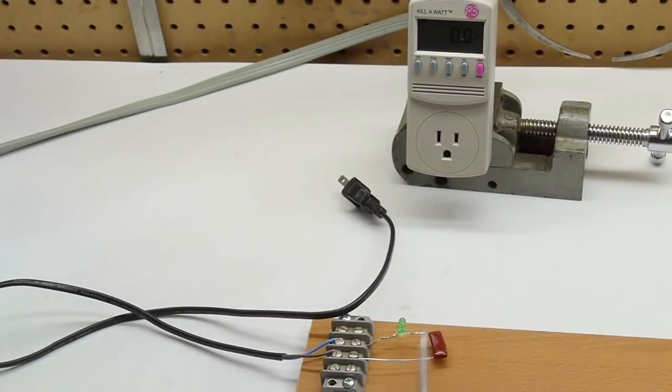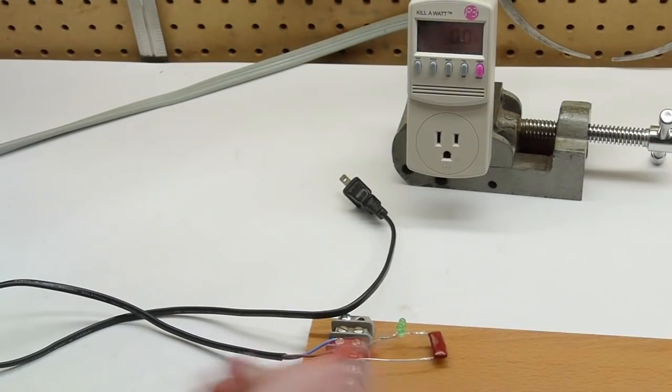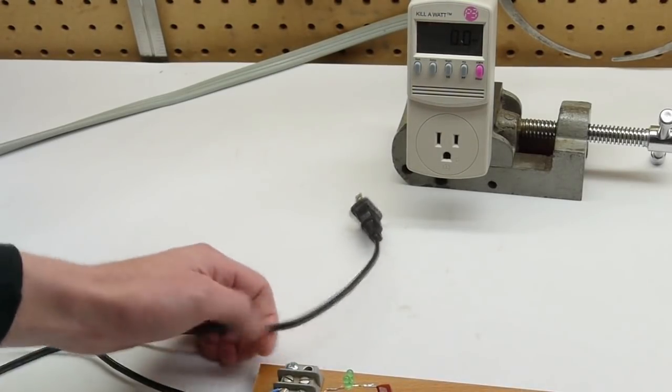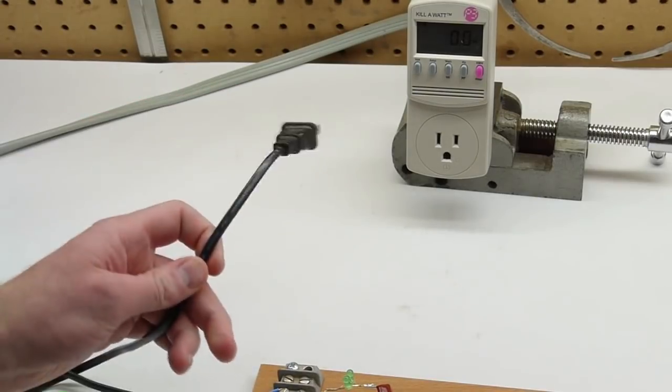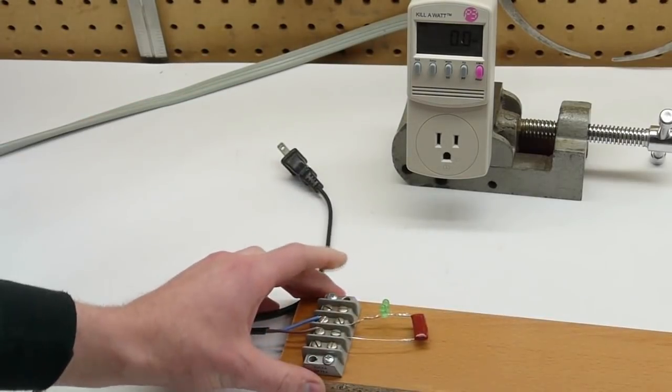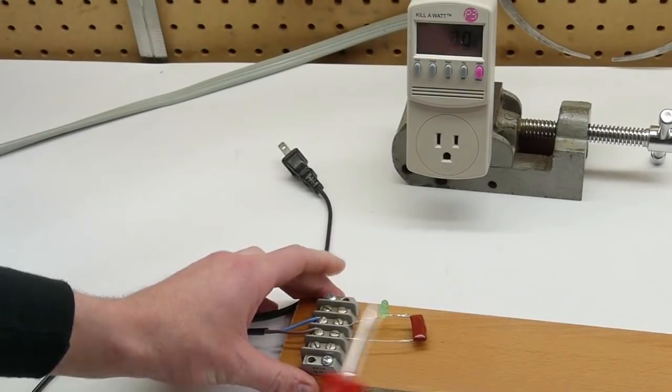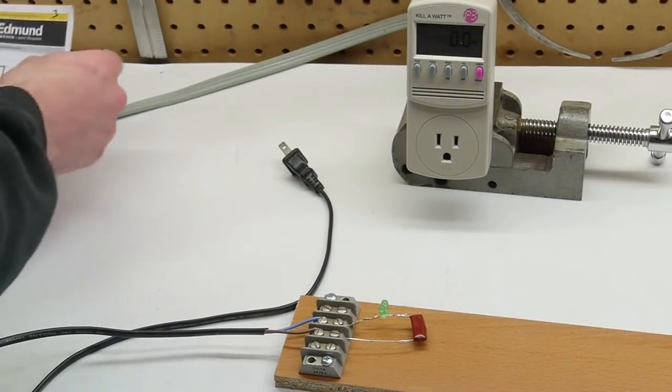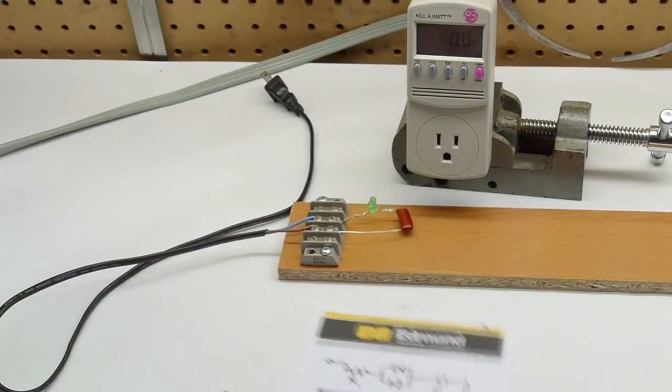I'm going to unplug this and also discharge the capacitor. It had a little tiny pop. I don't know if you heard that or not. But you wouldn't want to, if you did build this circuit, keep in mind that when you unplug from the wall here, that capacitor is going to store a charge. And just short it out like this. Like I say, you should probably be familiar with 120 volt safety if you're going to attempt this one.